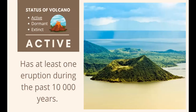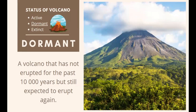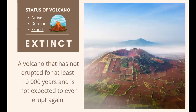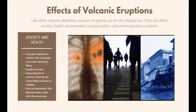Volcanoes may be active, dormant, or extinct. An active volcano has had at least one eruption in the past 10,000 years. A dormant or inactive volcano has not erupted for the past 10,000 years but is still expected to erupt again — there are about 339 inactive volcanoes in the Philippines, including Mount Apo in Davao. An extinct volcano has not erupted for at least 10,000 years and is not expected to erupt again. Like other natural calamities, volcanic eruptions can be very disastrous, affecting society, health, environment, transportation, and communication systems.